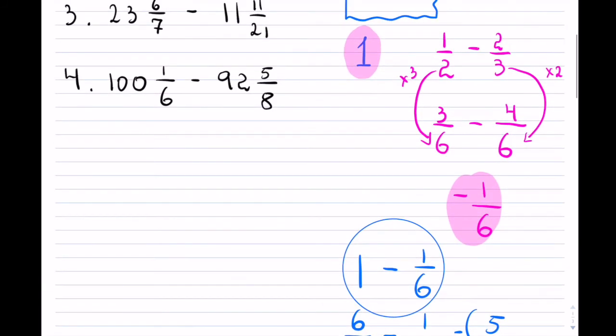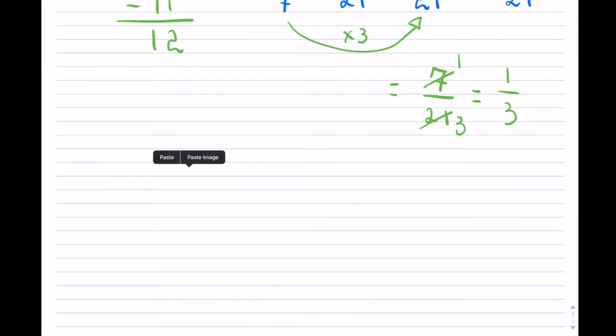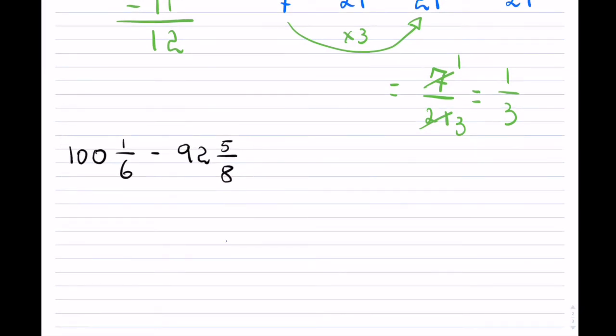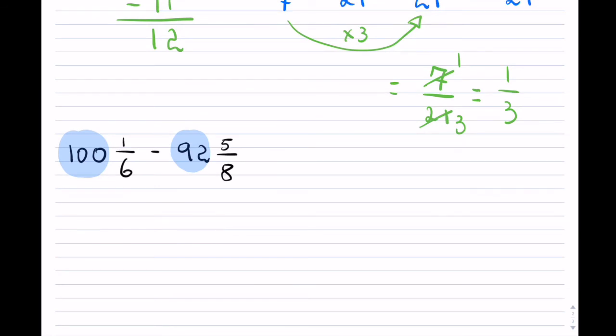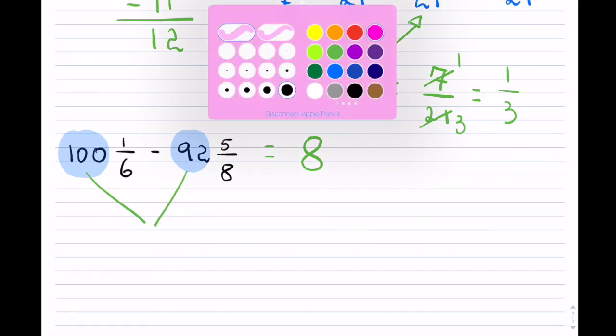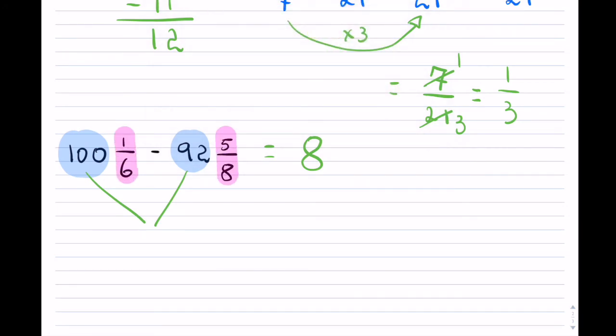Now let's take a look at the last example. So what happens here? Let's copy this one down. We have 100 and 1 sixth minus 92 and 5 eighths. So again, the process is, you take the whole numbers and you work with those first. So 100 minus 92 is 8.